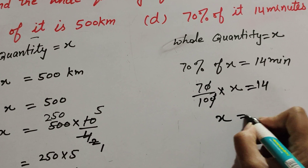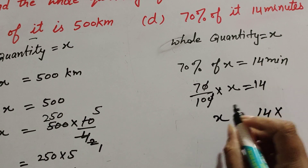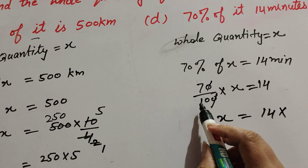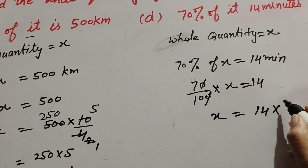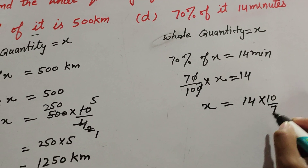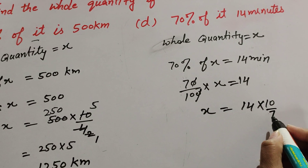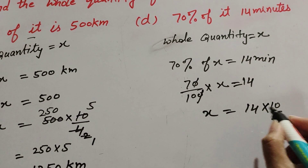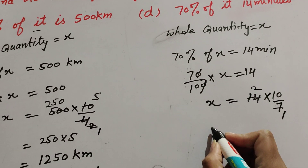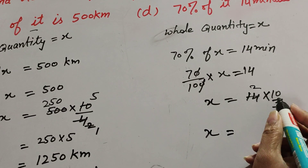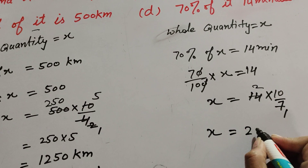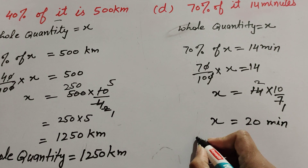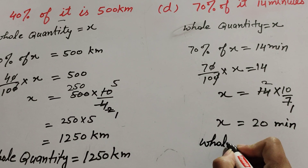Transposing 7 over 10 to the right hand side, we multiply by the reciprocal 10 over 7. 14 and 7 are both divisible by 7 — 7 ones are 7, 7 twos are 14 — so x equals 2 multiplied by 10, which is 20 minutes. The whole quantity is 20 minutes.